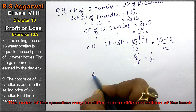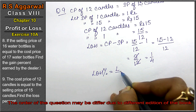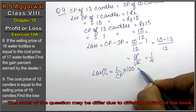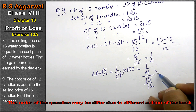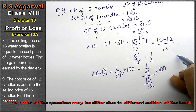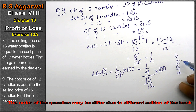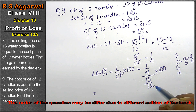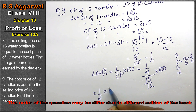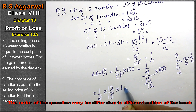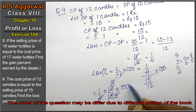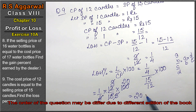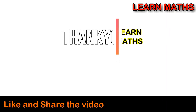Now we find the loss percentage. Loss percent equals loss upon CP into 100. Loss is 1 upon 4, CP is 15 upon 12, into 100. Using the rule of a/b divided by c/d equals a/b into d/c: 1 upon 4 into 12 upon 15 into 100. Simplifying: 4 and 12 cancel to give 3; 3 and 15 cancel to give 5; 100 divided by 5 is 20. So the loss percentage is 20%.